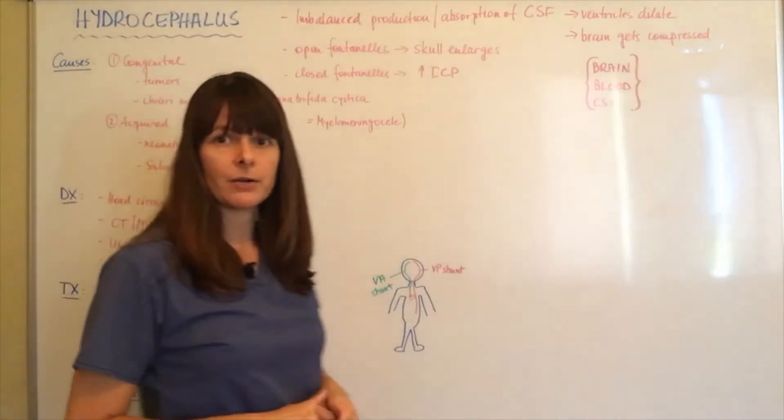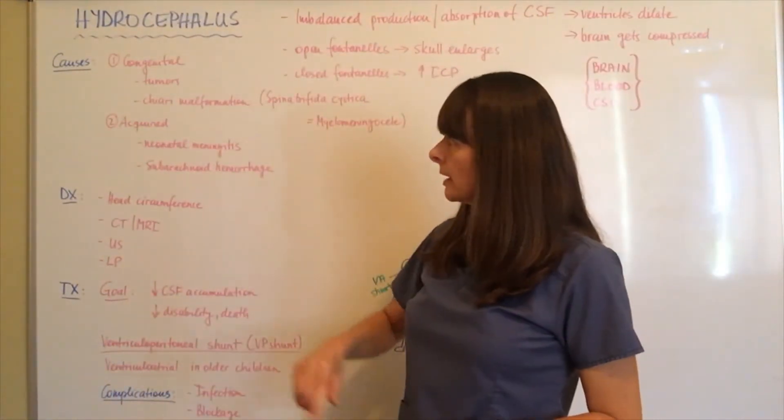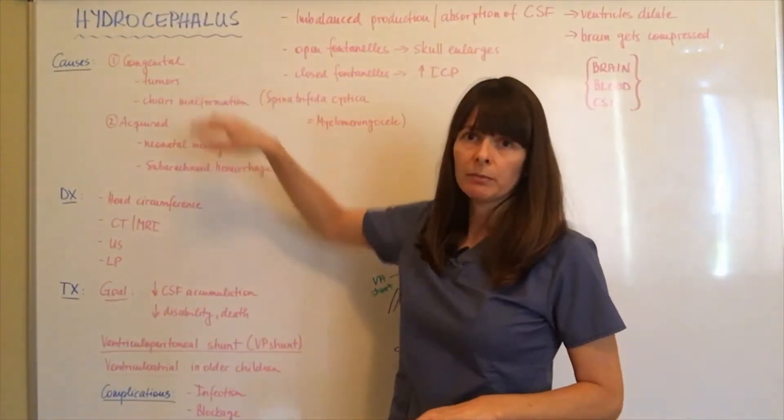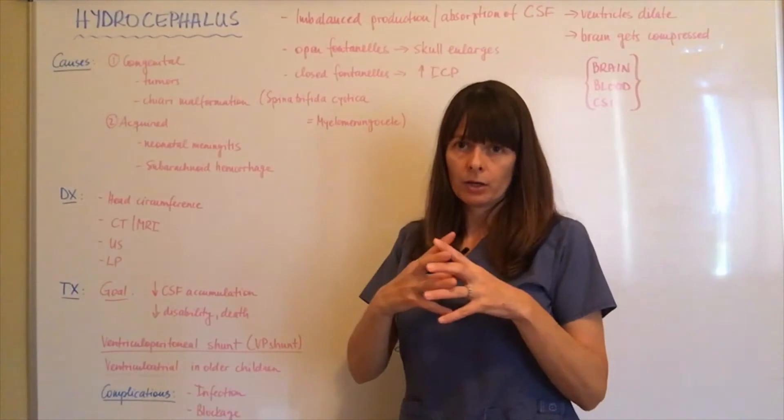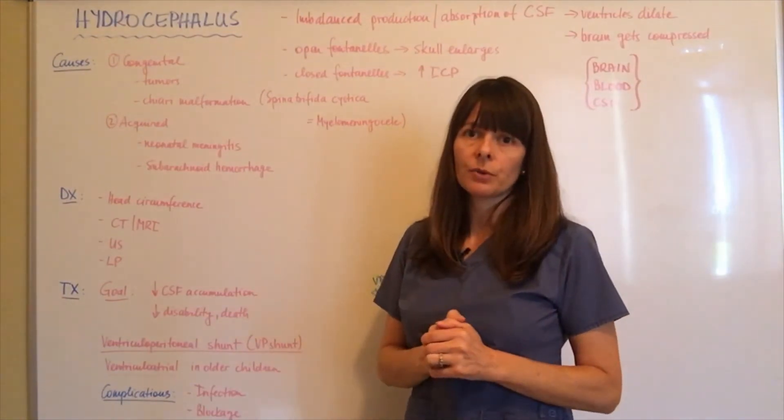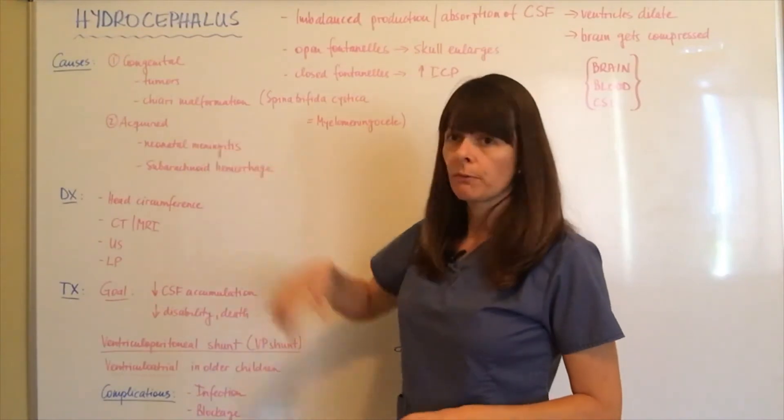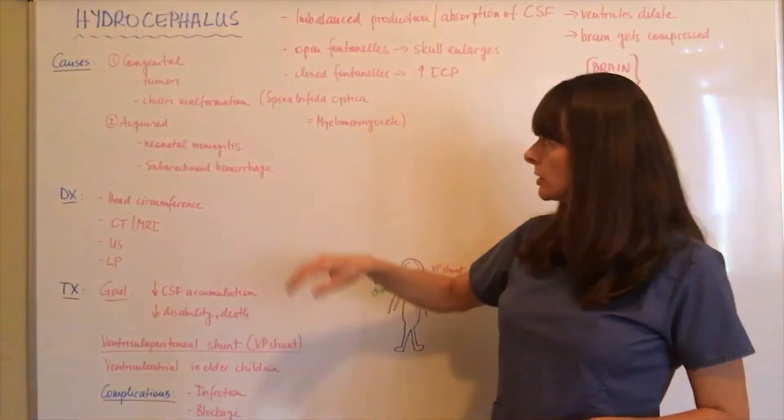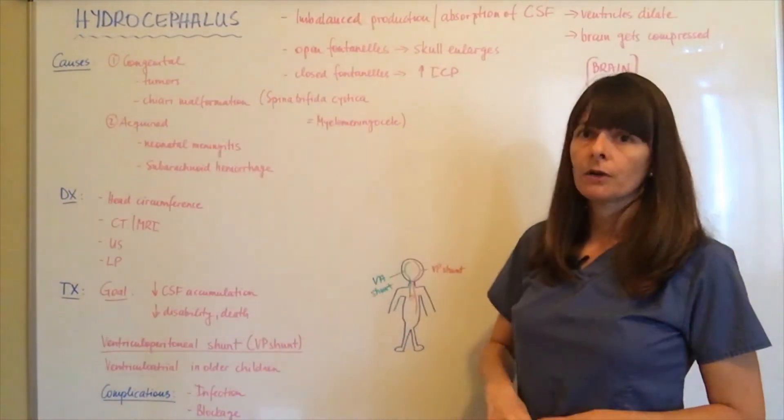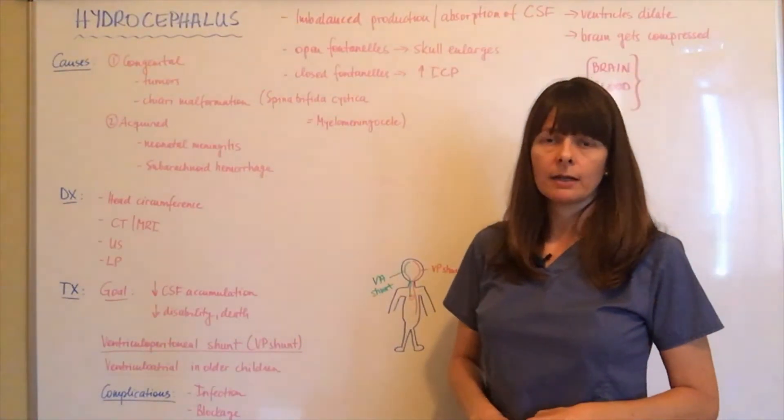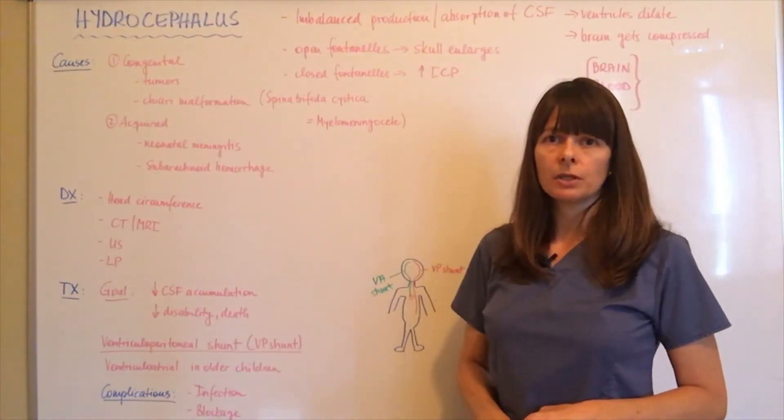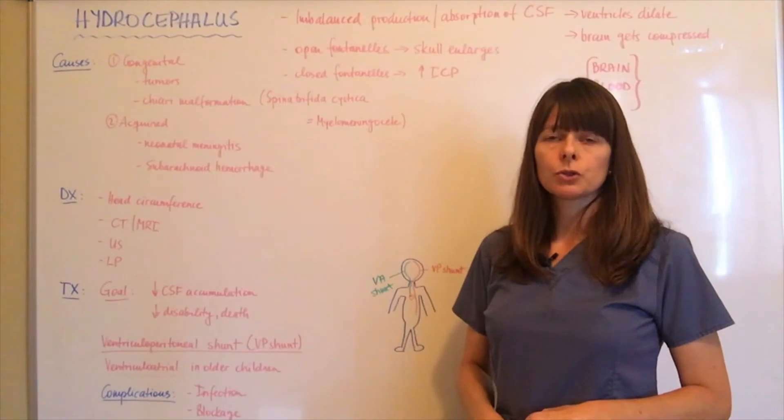What causes hydrocephalus? It's either congenital—that can be either by tumors causing increased cerebral spinal fluid production, or Chiari malformation. Chiari malformation is a complication of spina bifida cystica or myelomeningocele, which is a neural tube defect.